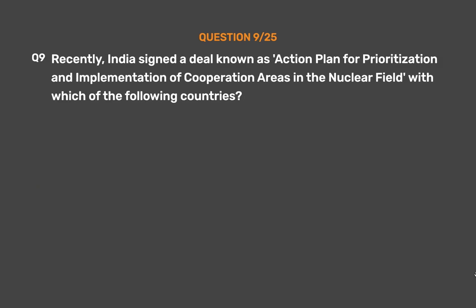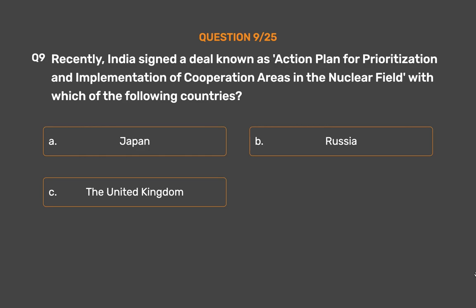Question No. 9: Recently, India signed a deal known as the Action Plan for Prioritization and Implementation of Cooperation Areas in the Nuclear Field with which of the following countries? Option A: Japan. Option B: Russia. Option C: The United Kingdom. Option D: The United States of America.